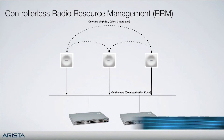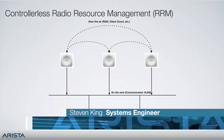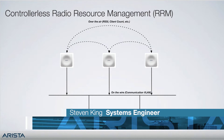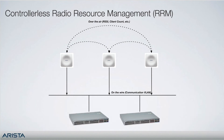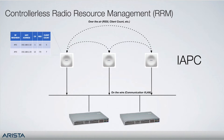In controller-based wireless architectures, RRM is achieved by the controller communicating with the APs and making changes accordingly. In our controllerless model, the APs communicate amongst themselves via messages sent both over the air and over the wire on a communication VLAN, with inter-AP coordination or APC. This information is used by each AP to build and maintain an RF neighbor table that helps them make decisions when it comes to RRM among other things.